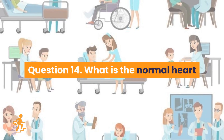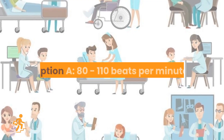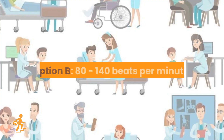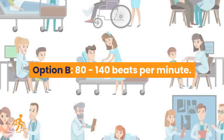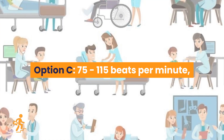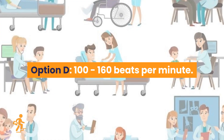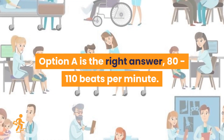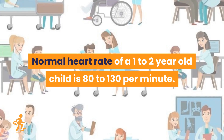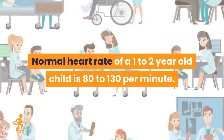Question 14. What is the normal heart rate of a child who is 1 to 2 years old? Option A: 80 to 110 beats per minute. Option B: 80 to 140 beats per minute. Option C: 75 to 115 beats per minute. Option D: 100 to 160 beats per minute. Option A is the right answer: 80 to 110 beats per minute. Normal heart rate of a 1 to 2 year old child is 80 to 130 per minute.